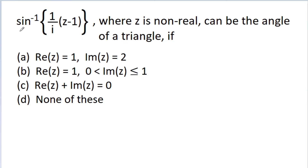In this video, we have given that sin inverse(1 / (iz × (g-1))), where g is non-real, can be the angle of a triangle. Option A: real(g) = 1 and imaginary(g) = 2. Option B: real(g) = 1 and imaginary(g) > 0 and ≤ 1. Option C: real(g) + imaginary(g) = 0. Option D: none of these.